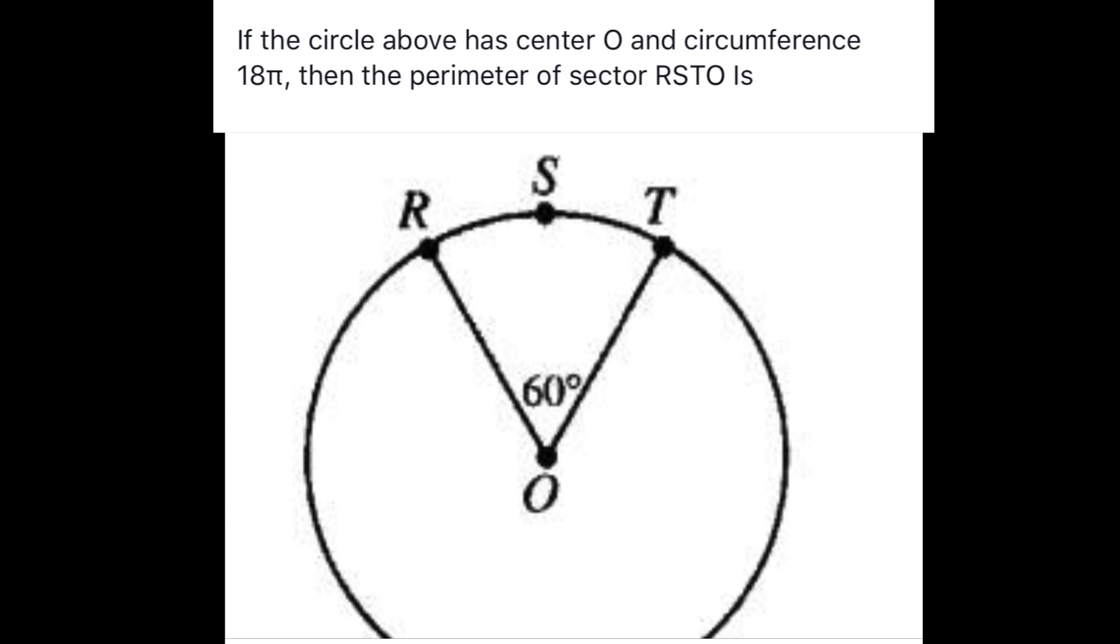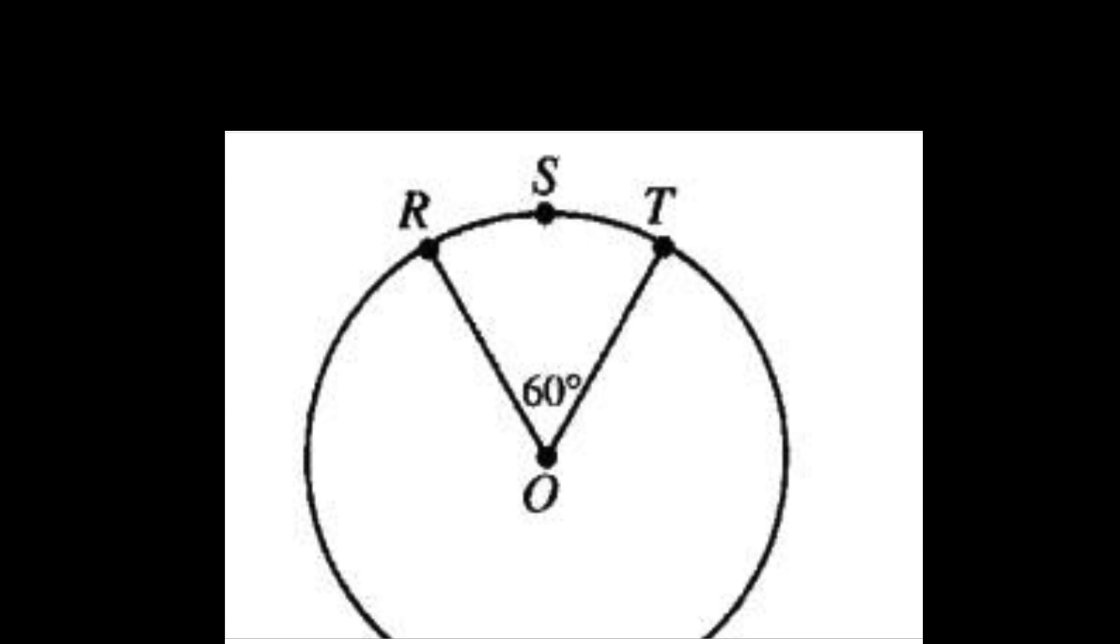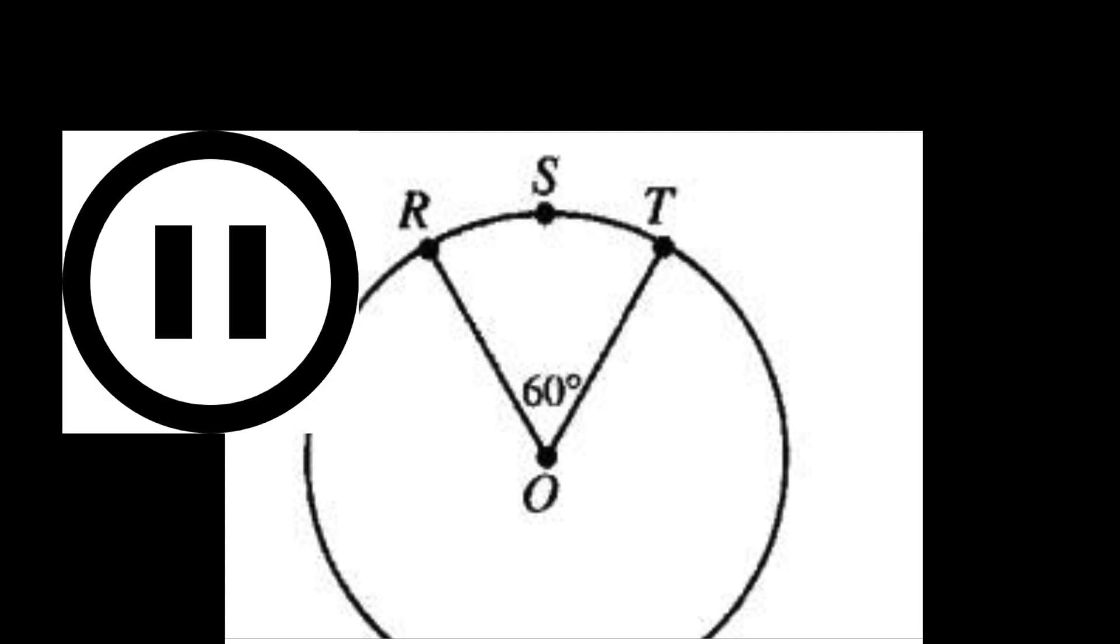Welcome back. This is Joe Sammo with another geometry equation. In this circle, O is the center, and what they want to find out is the perimeter of that sector O, R, S, T. I'll give you a couple seconds. Try this on your own. Hit the pause button and we'll connect after that.